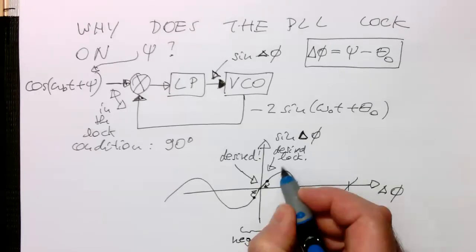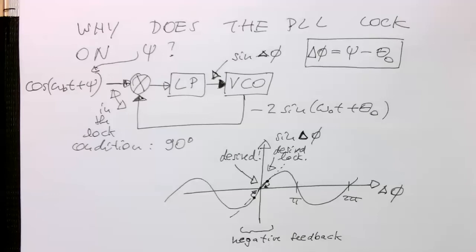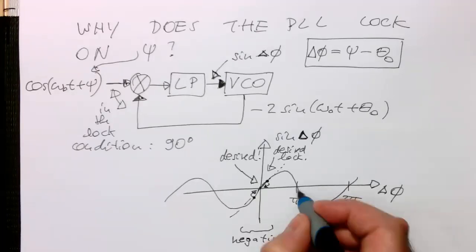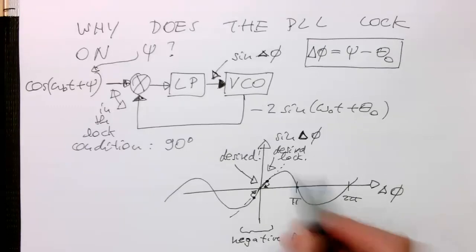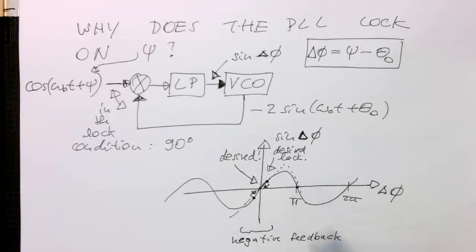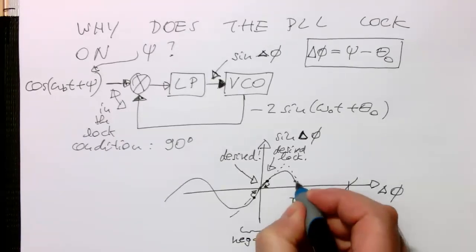And the PLL will always lock to this condition eventually here. And so now, I could draw a slope into this here. So now here at this point, this is also a zero point. So the PLL could also theoretically lock into this pi here. So I just draw a slope here.